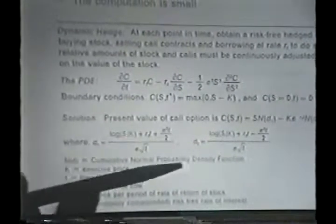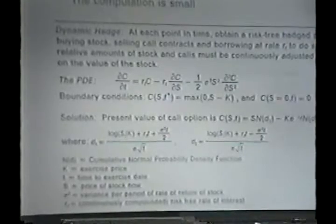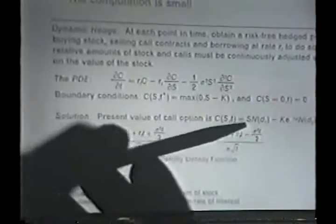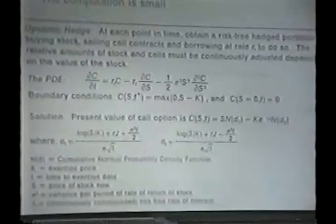We define d1 and d2, and the price of the option is given here. C of s and t is s n of d1 minus k e to the power of rt n of d2.